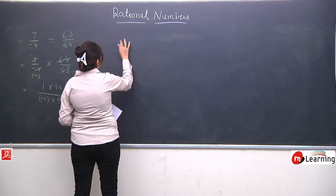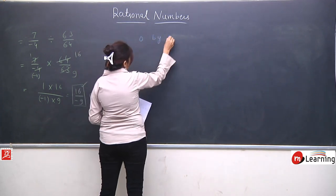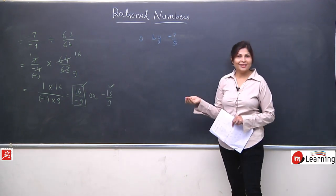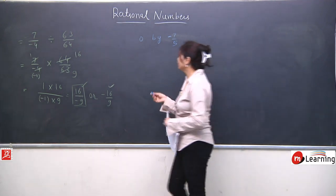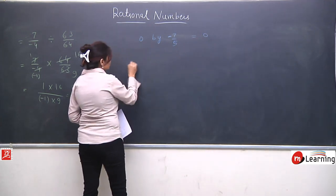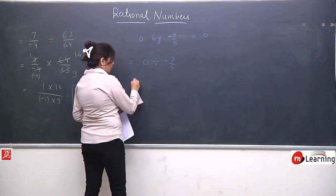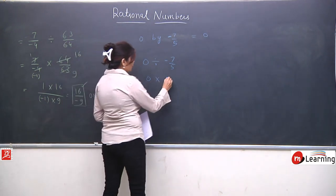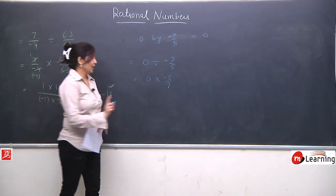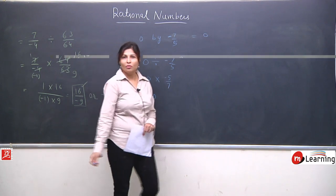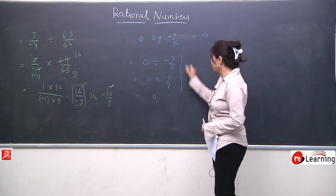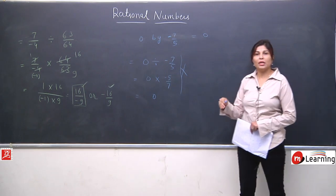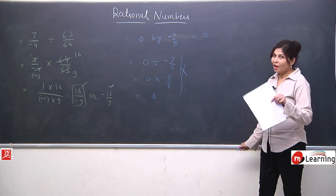Another very simple question: 0 divided by -7/5. Jaldi bata — answer kya hoga? Yes, it is 0. Directly we can write answer 0. Something multiplied by 0 is always 0. Aap yeh directly likh sakte hain — bilkul follow nahi karna hai. You can directly write the answer 0. This is useful for objective type questions in CBSE as well as NTSC exams.